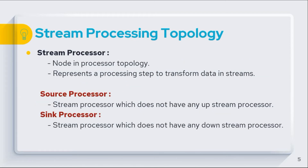A stream processor is a node in a processor topology. It represents a processing step to transform data in streams by receiving input records from its upstream processors, applying analytical or transformation operations, and producing output to downstream processors. There are two special types: the source processor, which does not have an upstream processor and acts as the start of the topology flow — its job is to consume records from one or more Kafka topics and produce streams to downstream processors. The sink processor does not have any downstream processor and sends received records from its upstream processor to a specified Kafka topic.